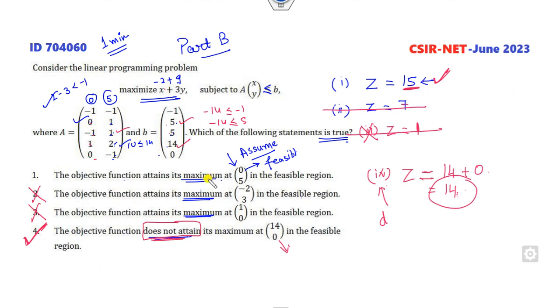This may or may not be there—you have to solve it completely. But it's a question from part B, only one correct option is there, so definitely this option is canceled out. It does not attain 14 is the right answer.